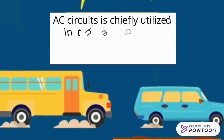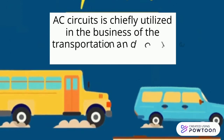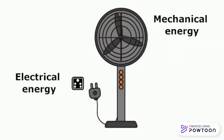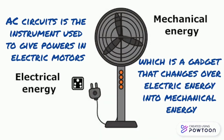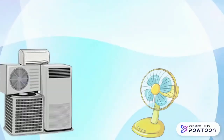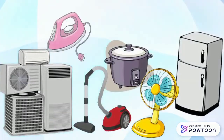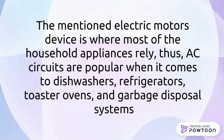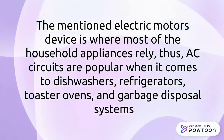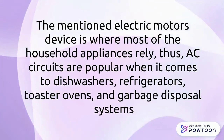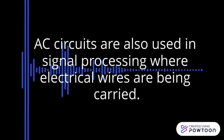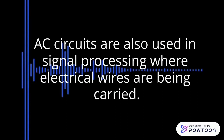AC circuits are chiefly utilized in the transportation and creation of power. AC circuits are the instrument used to give power to electric motors, which are devices that convert electric energy into mechanical energy. Most household appliances rely on electric motors. Thus, AC circuits are popular when it comes to dishwashers, refrigerators, toaster ovens, and garbage disposal systems. AC circuits are also used in signal processing where electrical wires are being carried.